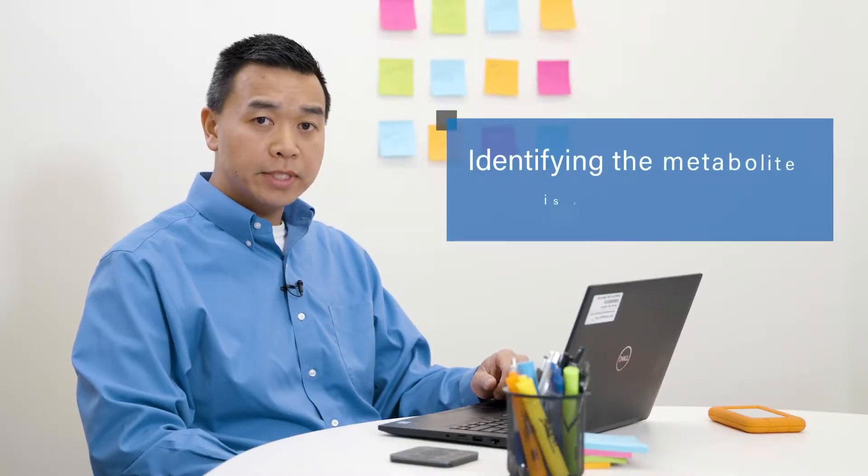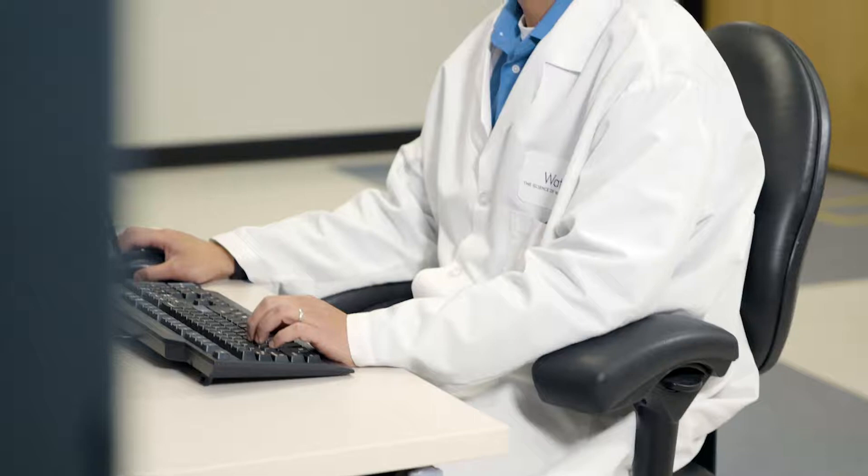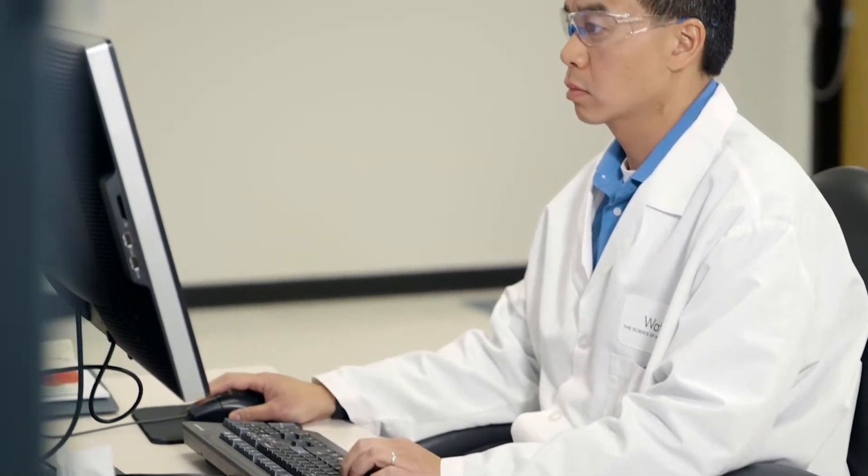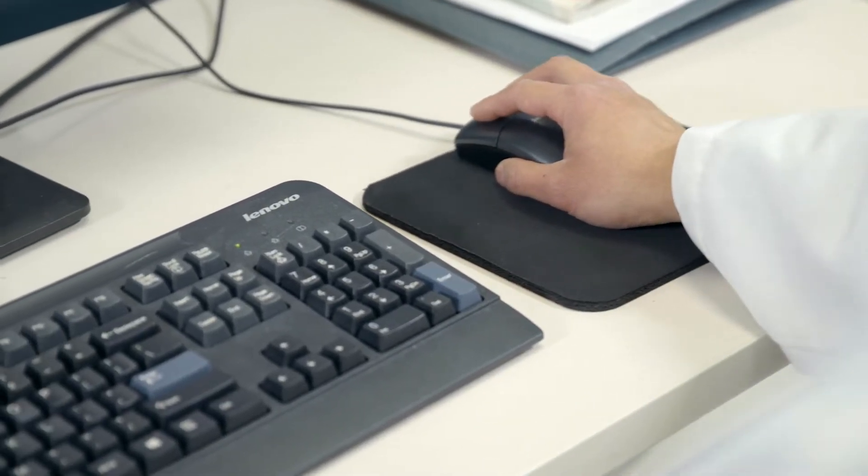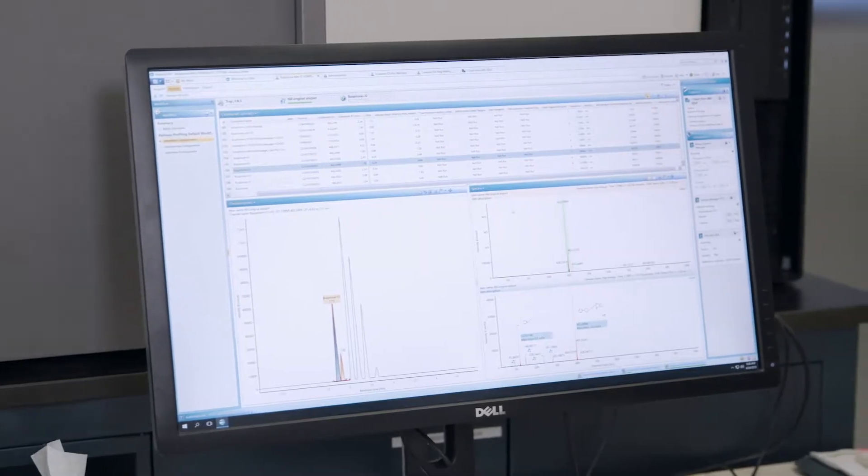However, identifying the metabolite is the first step. Another challenge for scientists performing these experiments is tracking these metabolites throughout the development process in different concentrations, background matrices, and experimental conditions.